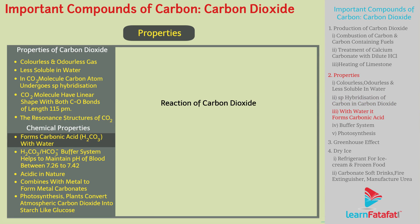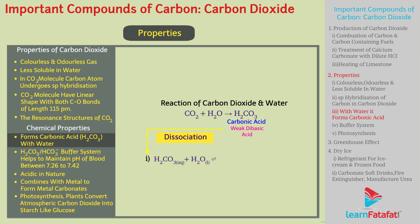Regarding its chemical properties with water, carbon dioxide forms carbonic acid H₂CO₃, which is a weak dibasic acid that dissociates in two steps. In the first step it forms HCO₃⁻, and in the second step it forms CO₃²⁻.